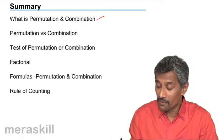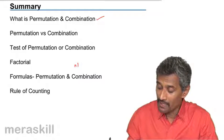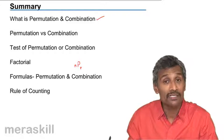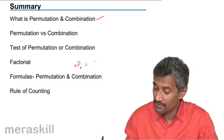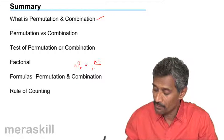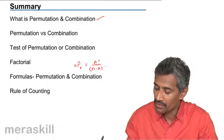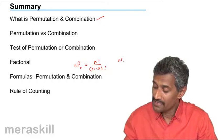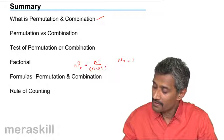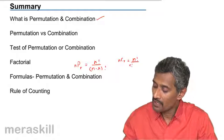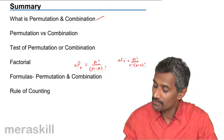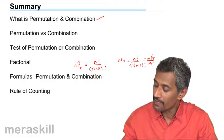Then we did the formula for permutation and combination, so nPr means you are selecting r terms out of a given n, wherein you have n factorial upon n minus r factorial and nCr is n factorial upon r factorial into n minus r factorial, which is the same as nPr upon r factorial.